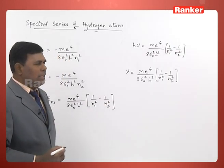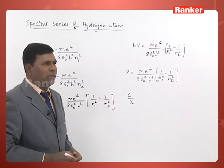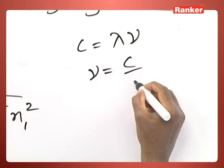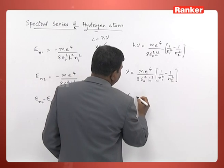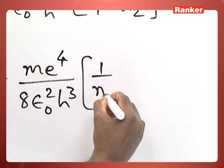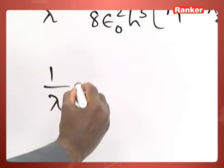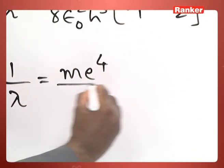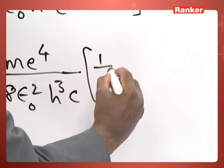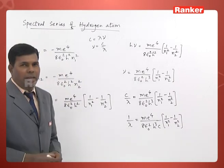We can also write ν as c/λ, where λ is the wavelength of the emitted radiation and c is the velocity of light, since c = λν. So c/λ equals m·e⁴ / (8·ε₀²·h³) × (1/n1² − 1/n2²). From that, the expression for 1/λ becomes: m·e⁴ / (8·ε₀²·h³·c) × (1/n1² − 1/n2²), where λ is the wavelength.